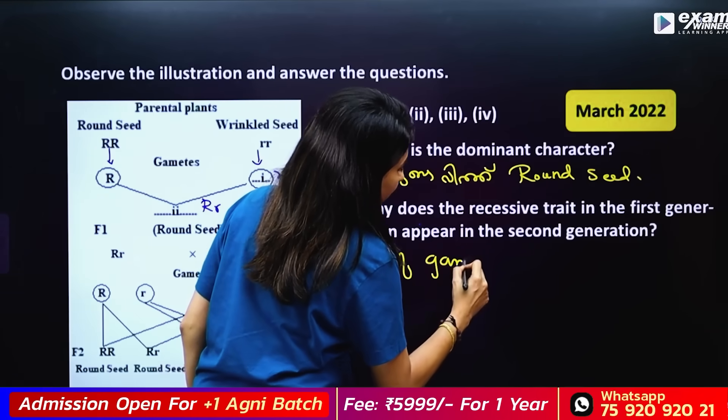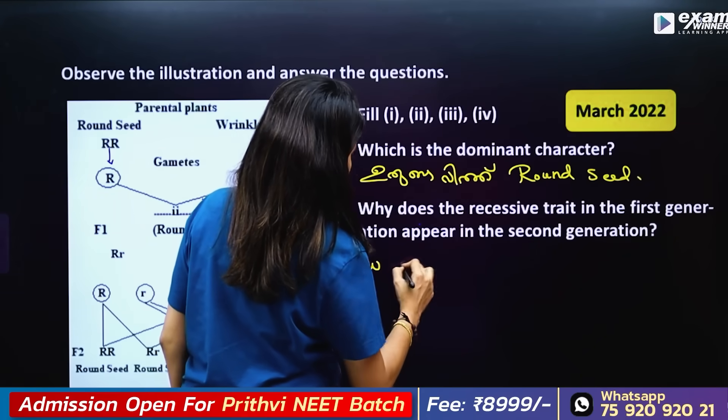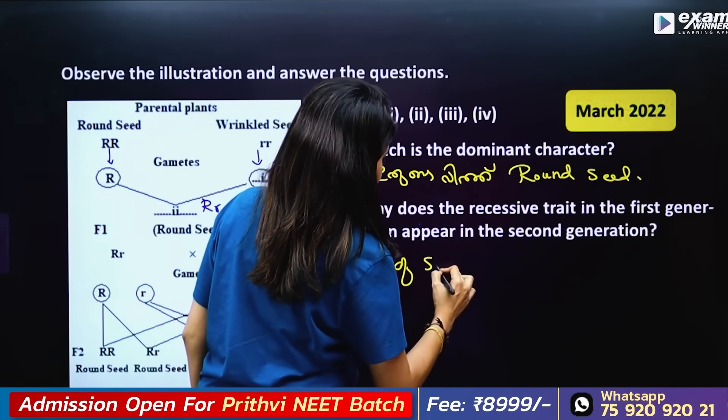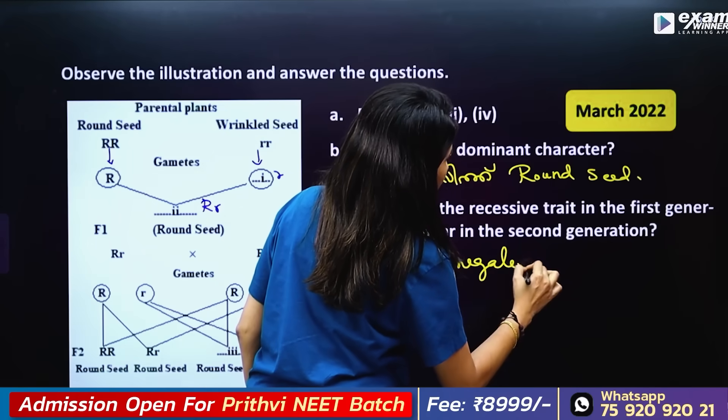Gametes — the Law of Segregation states that gametes are formed separately.